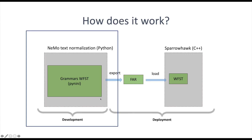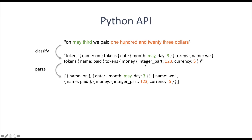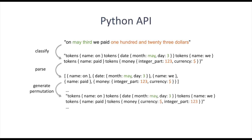Let's take a closer look at the Python API. First, we have the classification step carried out by an FST-based grammar, which tags the input with meta information and can also introduce some numerals. The parse step parses the string into an object with key values for better manipulation. The function generate_permutation may reorder some key values to match the written order of tokens — for example, in the case of 123 dollars, the dollar sign and the number are swapped. In the final verbalization step, the grammar removes all meta information and creates the final output.